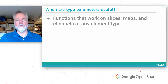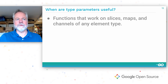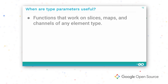One case where type parameters can be useful is when writing functions that operate on the special types defined by the language: slices, maps, and channels. If a function has parameters with those types and the function code doesn't make any particular assumptions about the element types, then it may be useful to use a type parameter — for example, the map keys function we saw earlier. The alternative is typically to use reflection, which is a more awkward programming model, is not statically type checked, and is often slower as well.